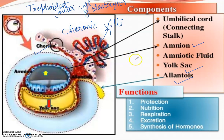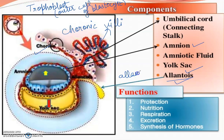Agli baat - allantois se yeh blood vessels form karega, and that will run between fetus and uterus wall. Jo hamare developing fetus hai aur uterus wall ke beech - umbilical cord jo allantois se chorion ke contact mein hai, wahan bhi yeh vascular structure banayega jis ko hum bolte hain allanto-chorion, that will form the fetal part of placenta.